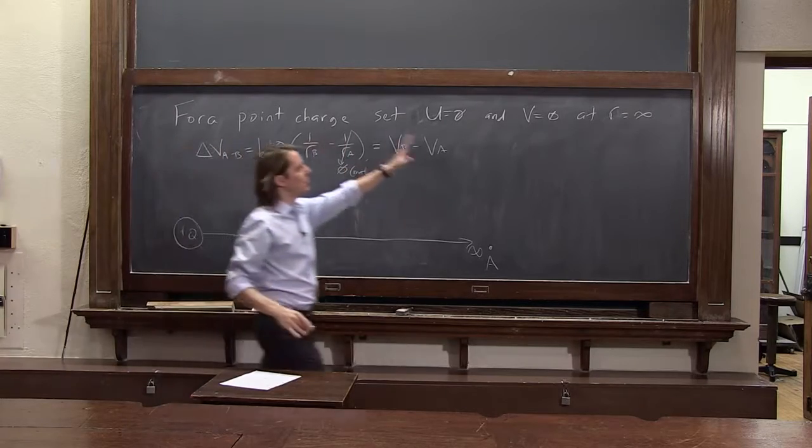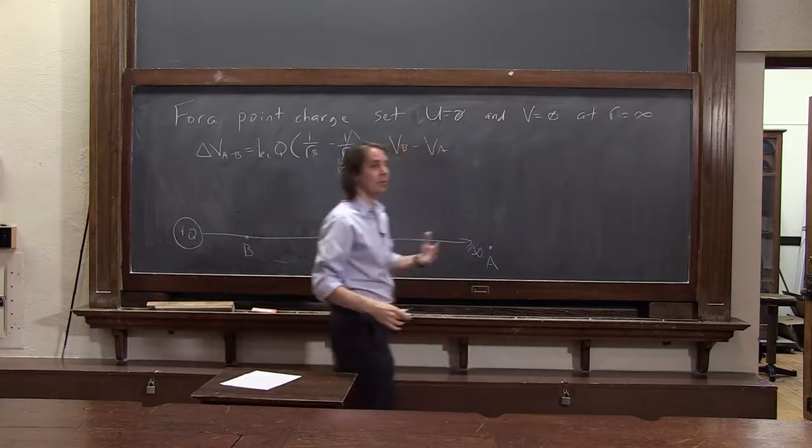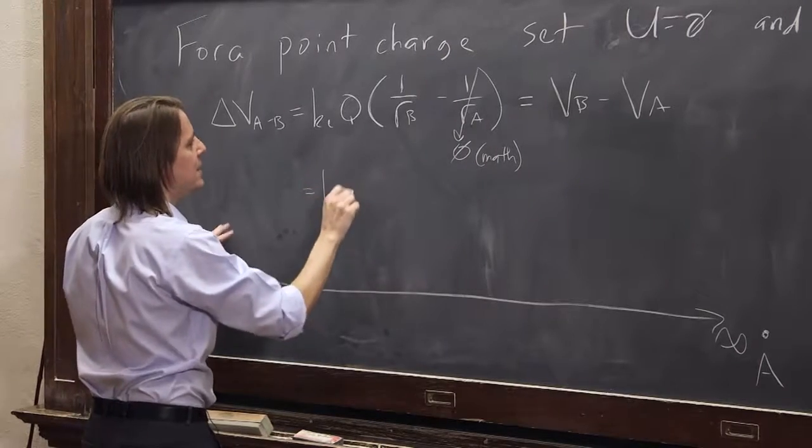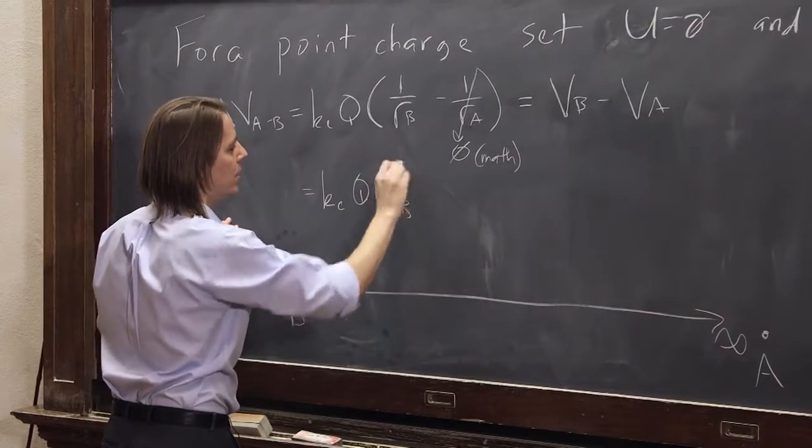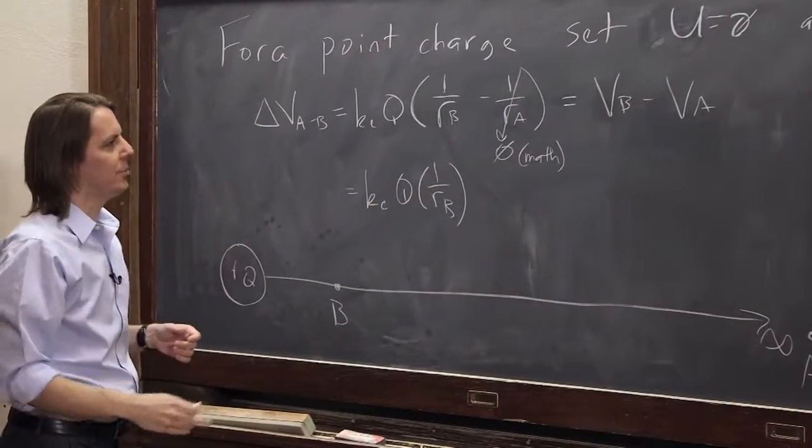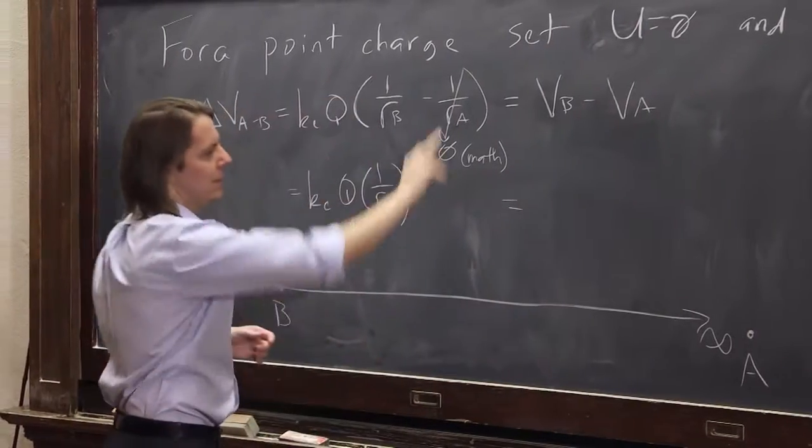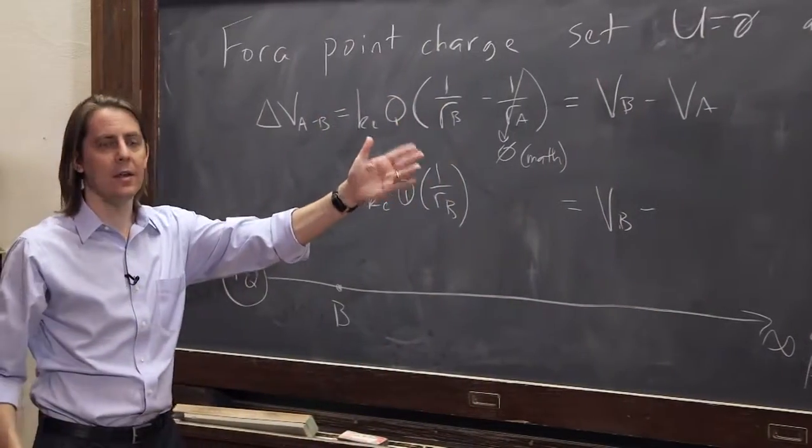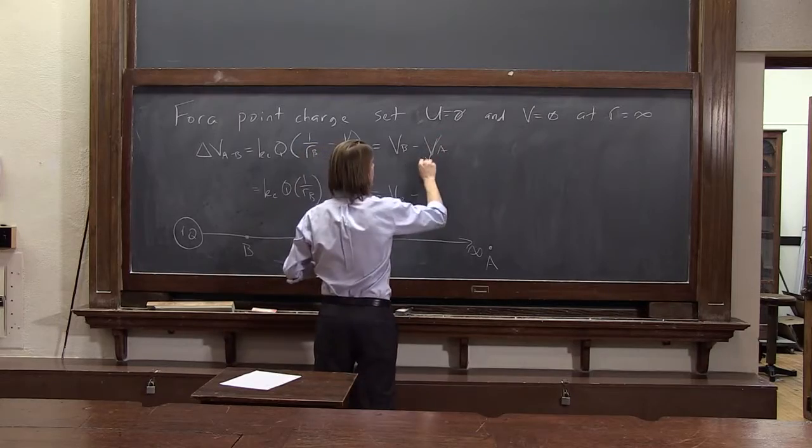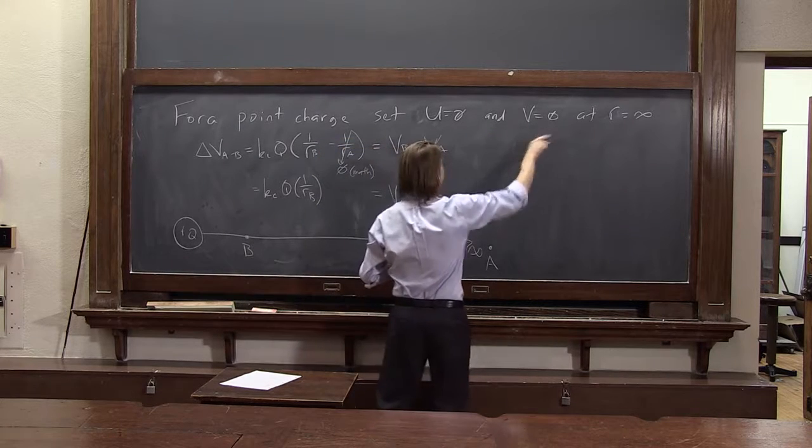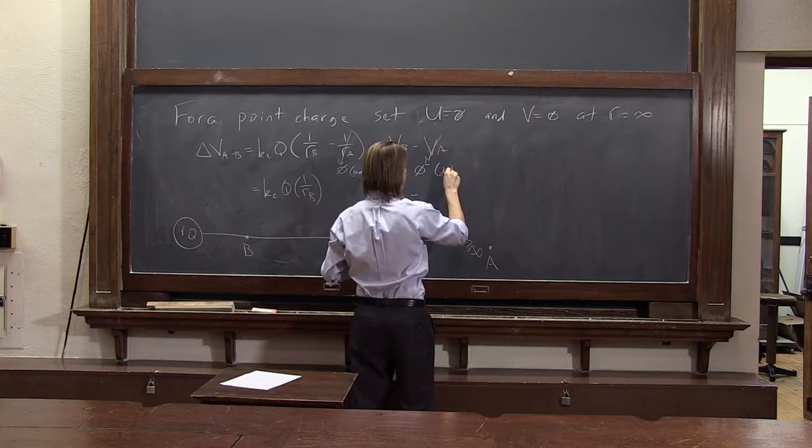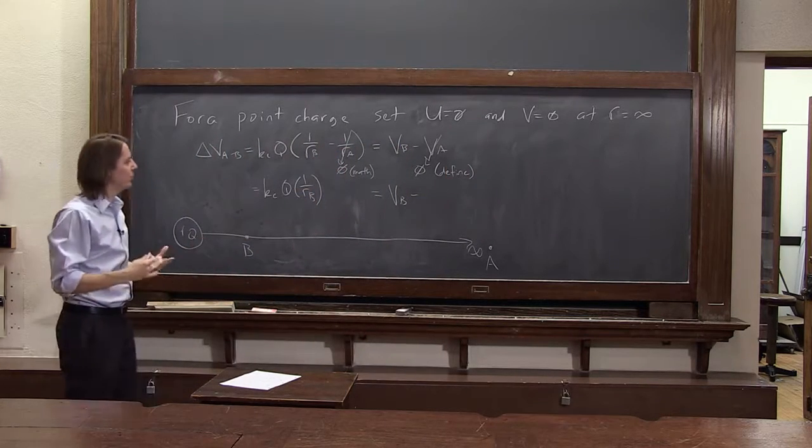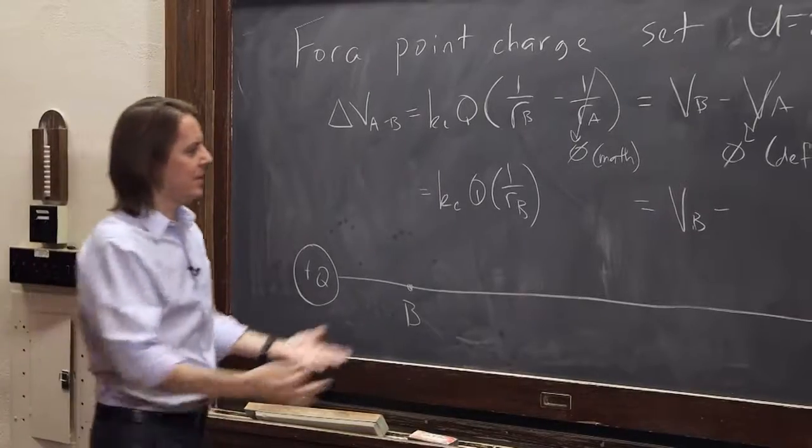That's not zero because of what we said here. It's zero because 1 over infinity is zero. So then we have KeQ times 1 over Rb. That's what that side becomes. And now let's look over here. This equals Vb minus Va. But this is zero. This is zero by our definition. So you don't want to mix those up. One is zero mathematically. One is zero because we said it's zero.